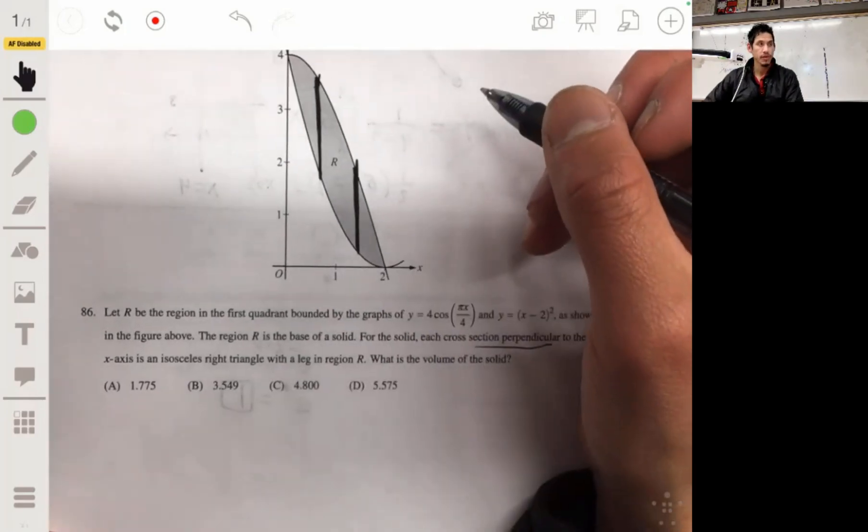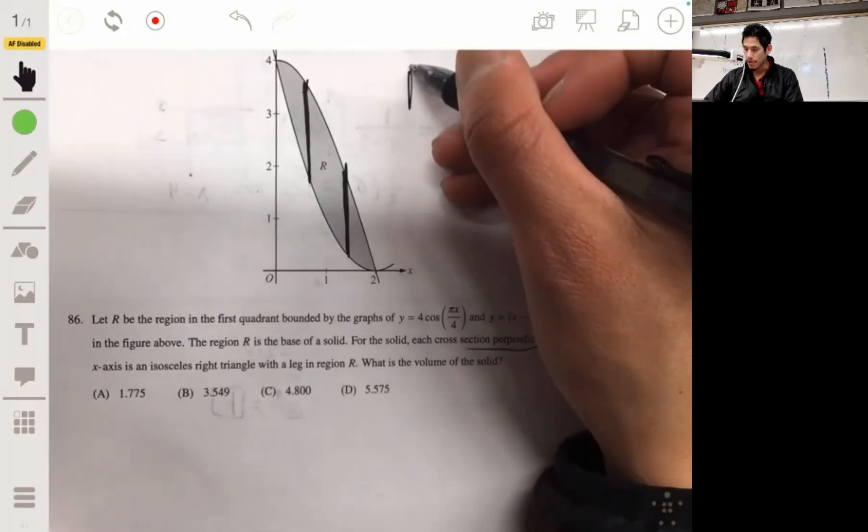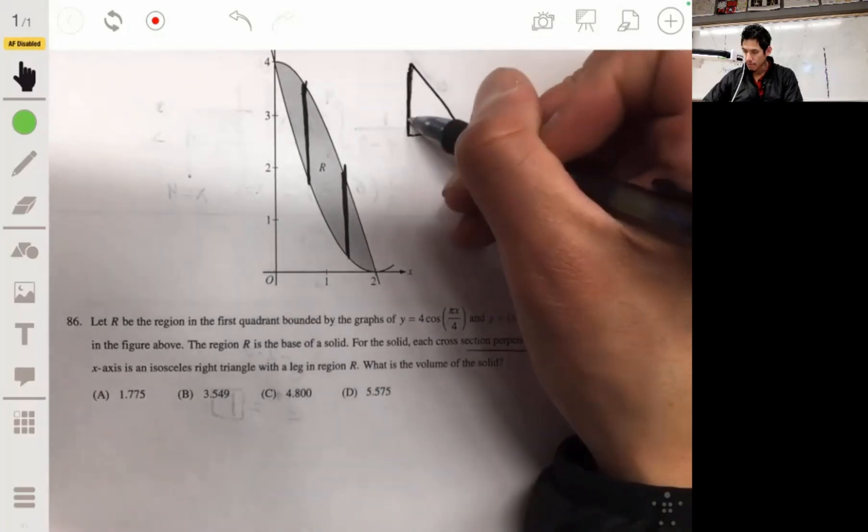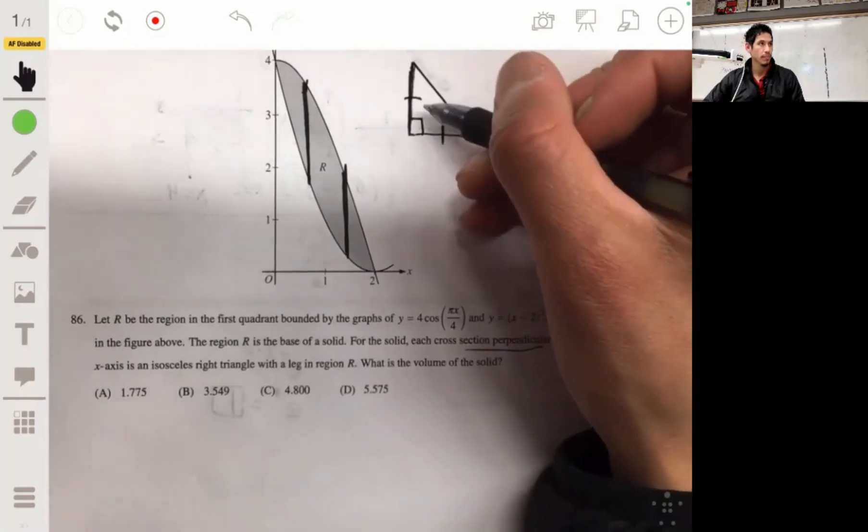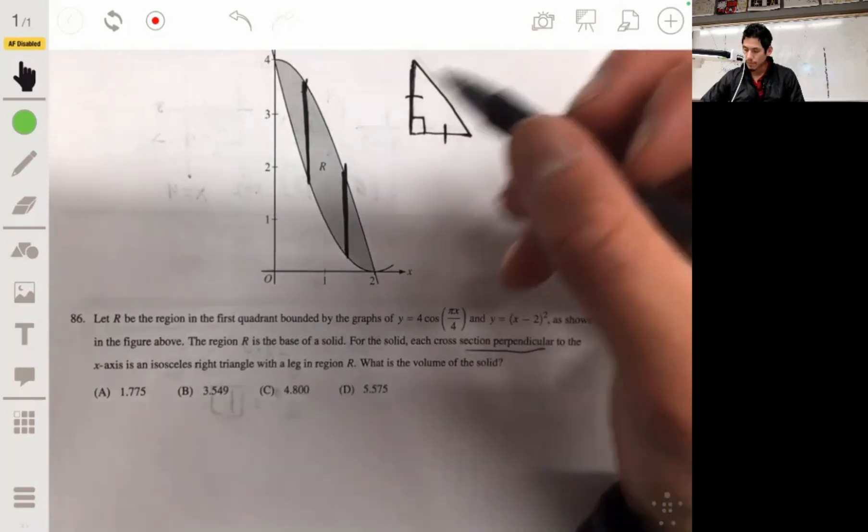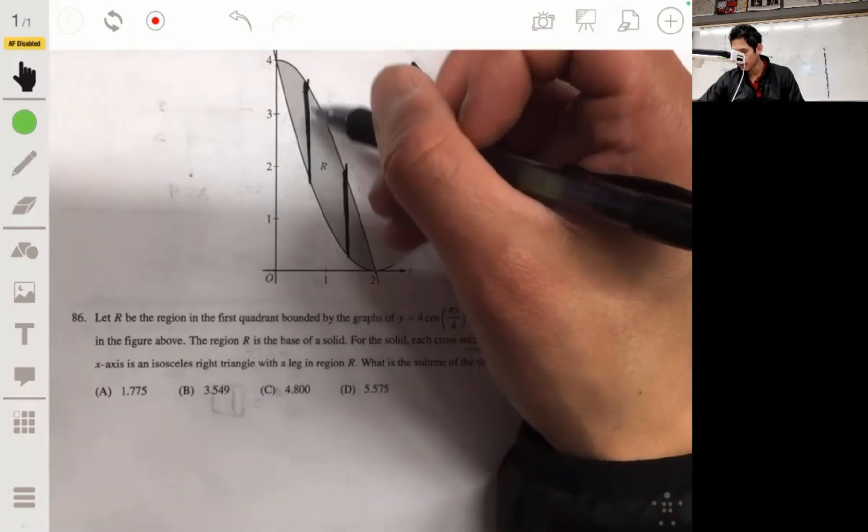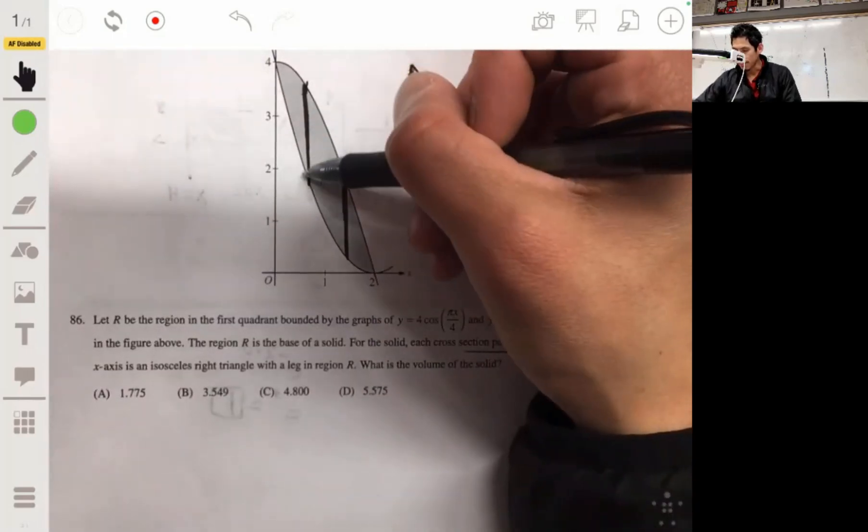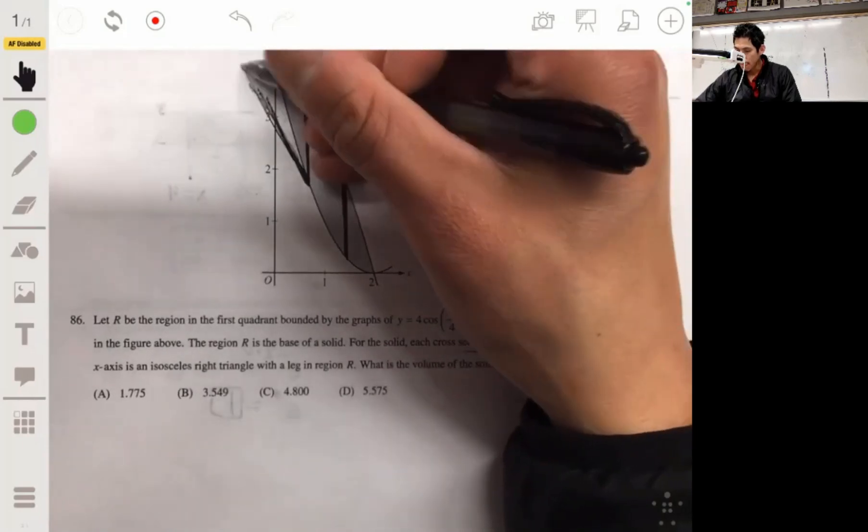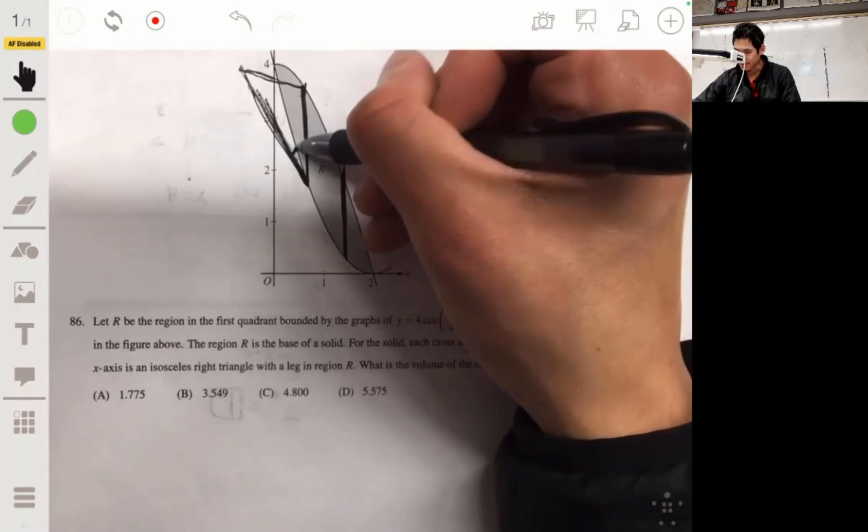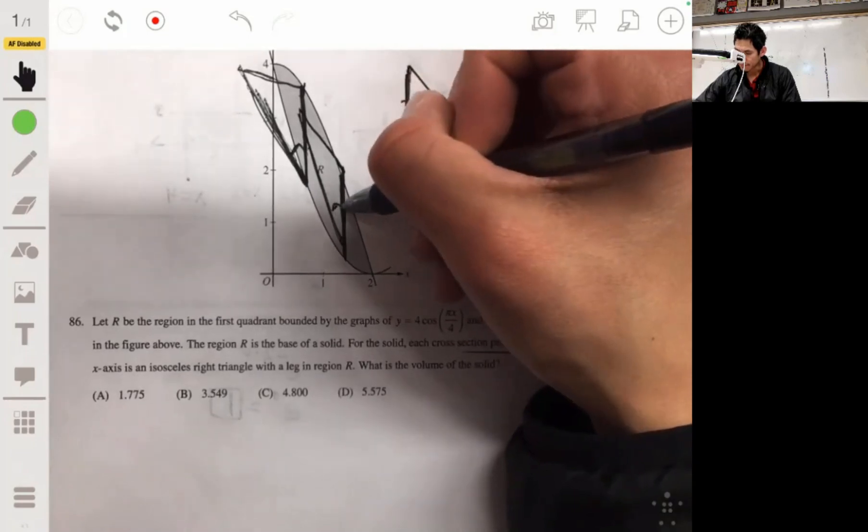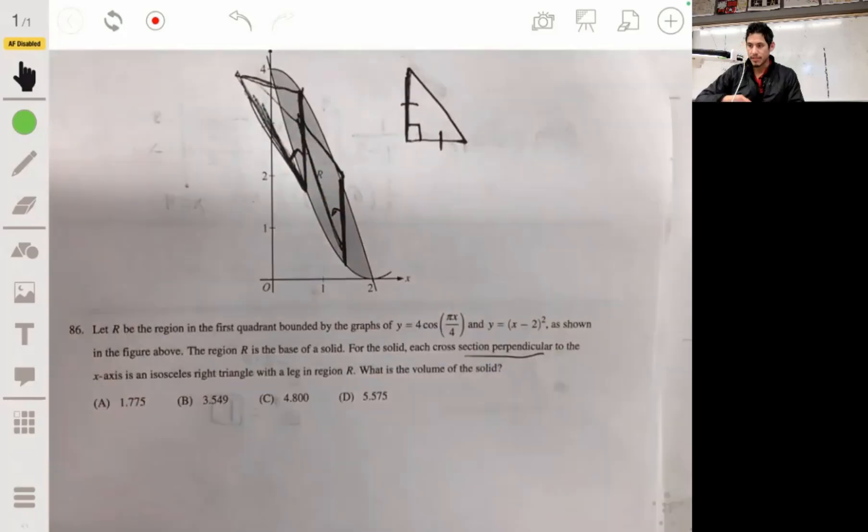Now, these line segments make up the base of this isosceles right triangle. So essentially we have going on isosceles right triangle, right angle with two sides the same length. I want to draw this out, but like I say, I'm kind of impressed if you can visualize this.